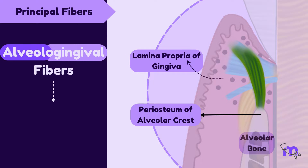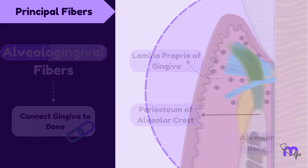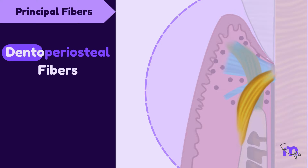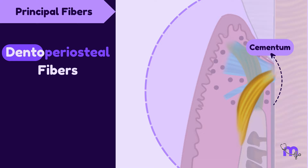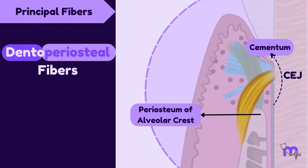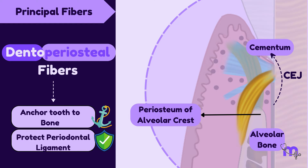Their primary function is to connect the gingiva to the bone. Moving on to the dento-periosteal fibres — 'dento' means they come from the cementum, particularly near the cemento-enamel junction, and 'periosteal' means they end up in the periosteum of the alveolar crest. These fibres anchor the tooth to the bone, and their main function is to protect the periodontal ligament.